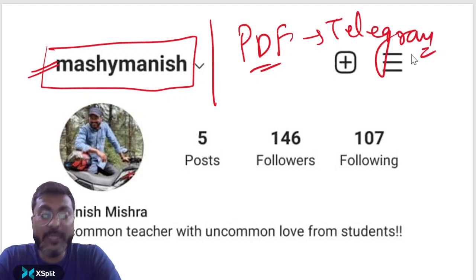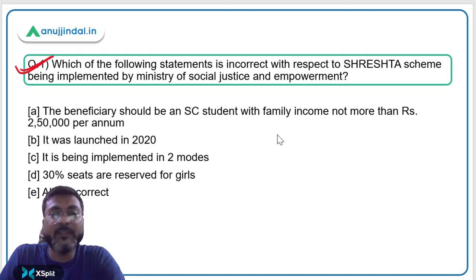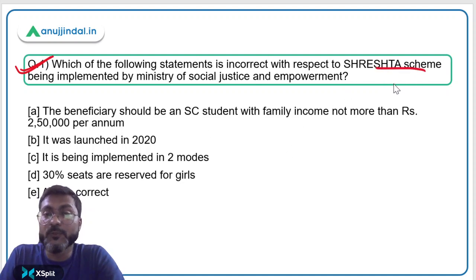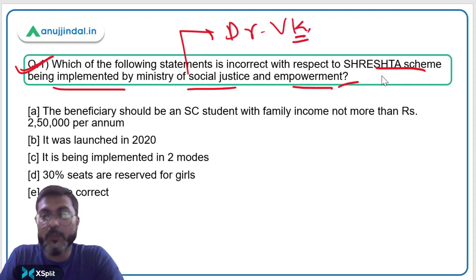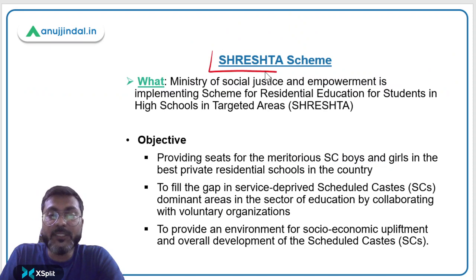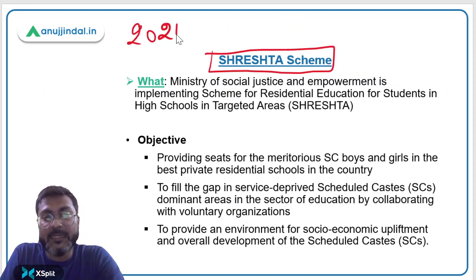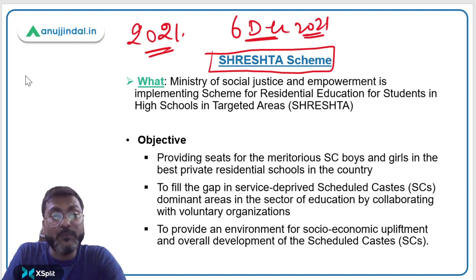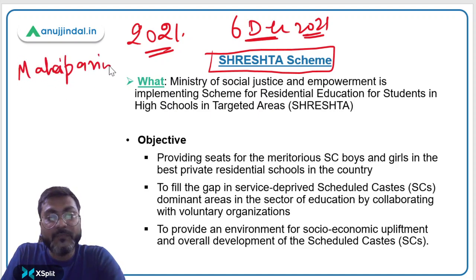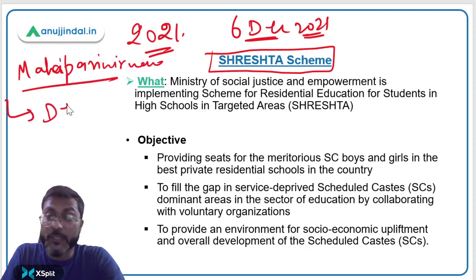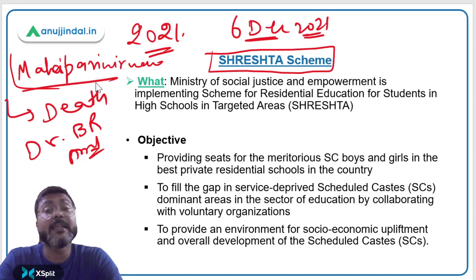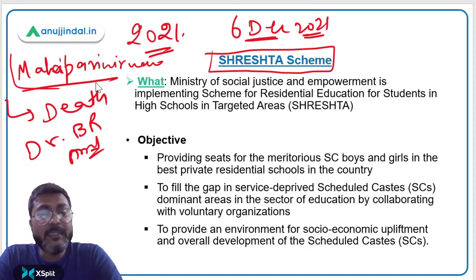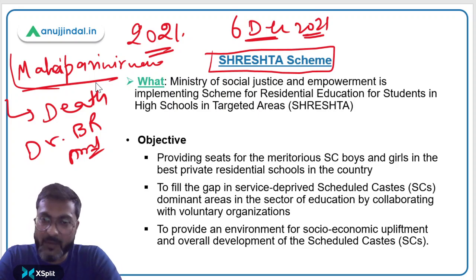Question one asks which statement is incorrect about the Shresth scheme, implemented by the Ministry of Social Justice and Empowerment headed by Dr. Virendra Kumar. Remember, the Shresth scheme was launched on 6th December 2021, which is Mahaparinirvan Divas — the death anniversary of Dr. B.R. Ambedkar — observed as such by the Government of India. This scheme was launched by the Ministry of Social Justice and Empowerment on that day.